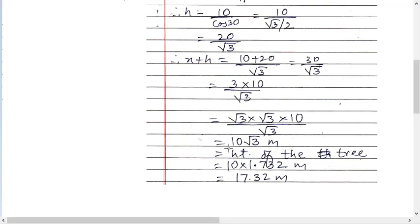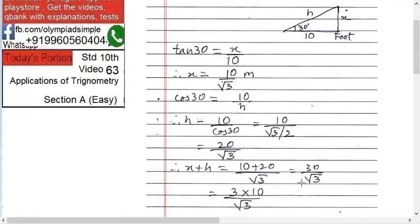That is the height of the tree. Now in the exam if only this much is given, then take care. Else multiply root 3 by 1.732 because value of root 3 is 1.732, always remember. Value of root 2 is 1.41. So 10 into 1.732, that is 17.32 is the height of the tree.